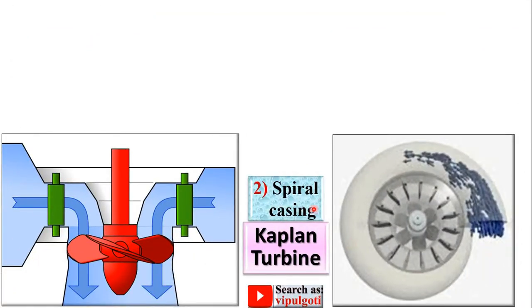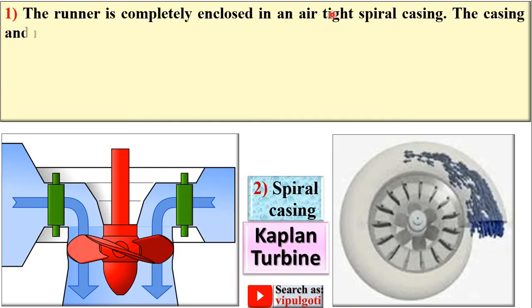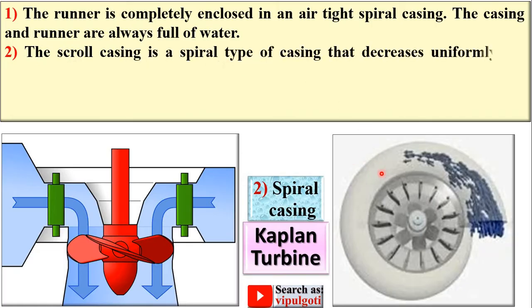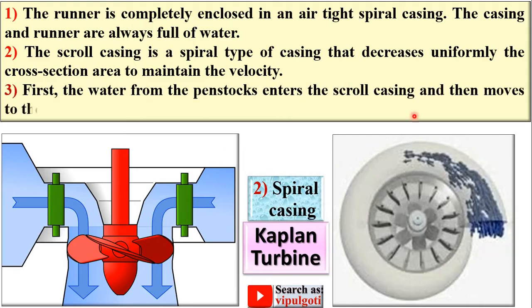Next part: spiral casing. The runner is completely enclosed in an airtight spiral casing; the casing and runner are always full of water. The scroll casing is a spiral type of casing that decreases uniformly in cross-sectional area to maintain the velocity. Water from the penstock enters the scroll casing and then moves to the guide vanes.